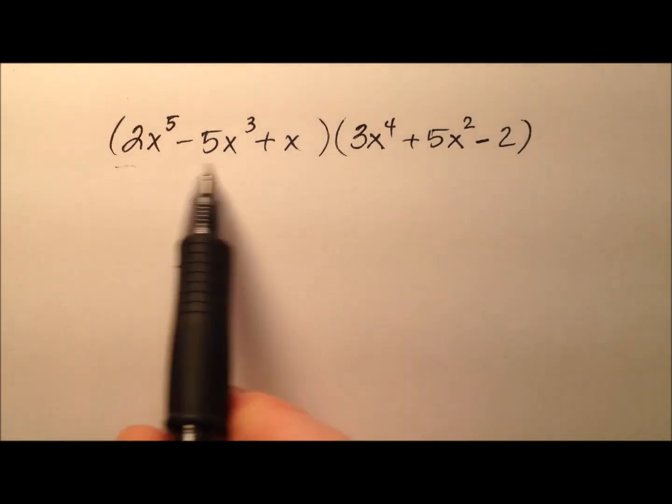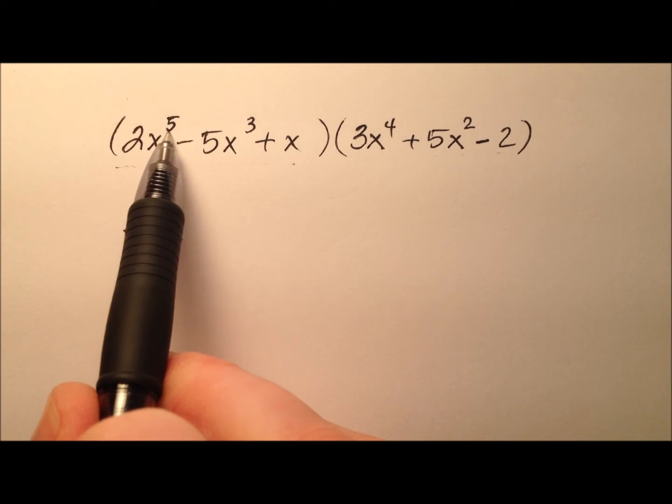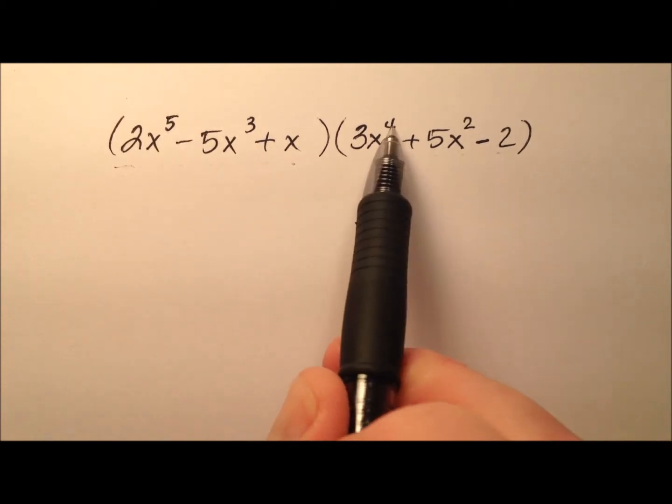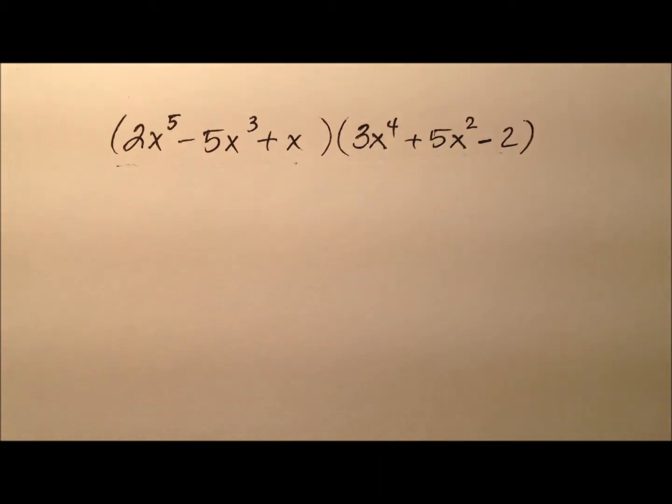In this example, we're going to multiply these two trinomials together. It looks like the first one is a quintic trinomial, and we're going to multiply this with a quartic trinomial. So they're both written in standard form, which is nice,